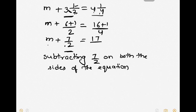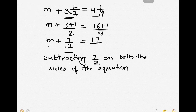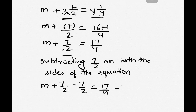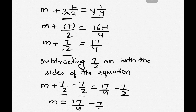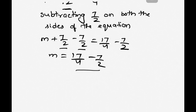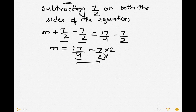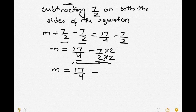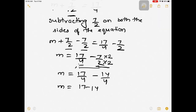We subtract 7 by 2 from both sides of the equation: m plus 7 by 2 minus 7 by 2 is equal to 17 by 4 minus 7 by 2. Both fractions do not have the same denominator, so we multiply both numerator and denominator of 7 by 2 by 2, to make the denominator 4. So m is equal to 17 by 4 minus 14 upon 4, which gives m is equal to 17 minus 14 upon 4.